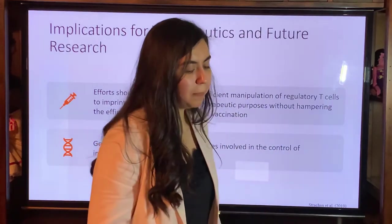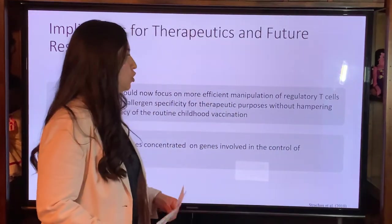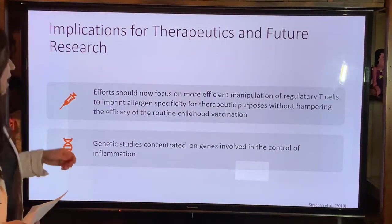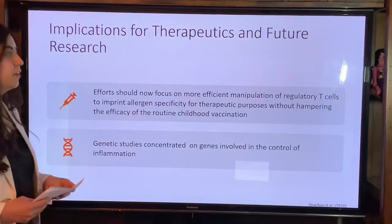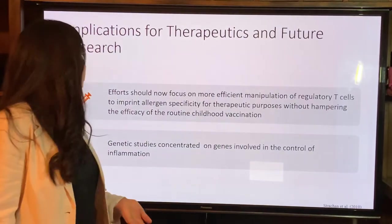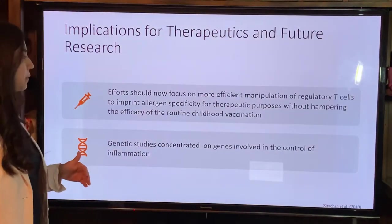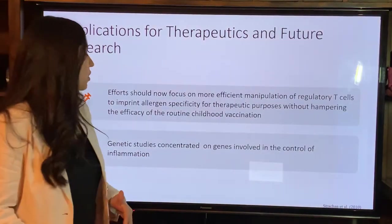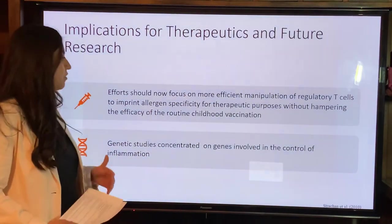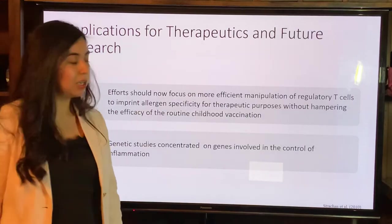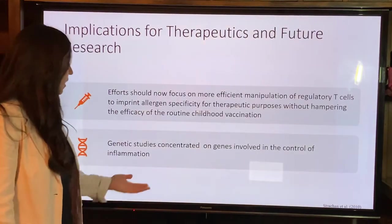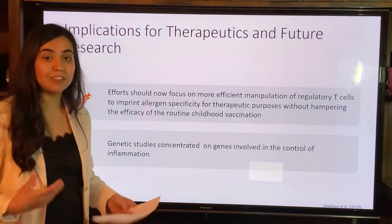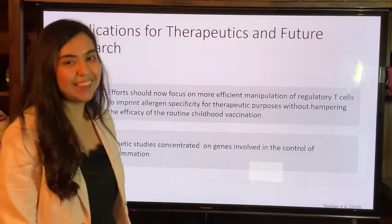Some implications and therapeutics for future research on the Hygiene Hypothesis: efforts should focus more on efficient manipulation of regulatory T cells to imprint allergy-specific specificity for therapeutic purposes without hampering the efficacy of routine childhood vaccination. Additionally, genetic studies concentrated on genes involved in the control of inflammation in our body. Thank you.